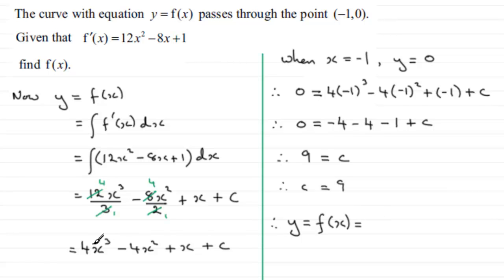And therefore we've got what y equals, which is f(x), and that will equal 4x³ - 4x² + x + 9. And there you have it, f(x) then.